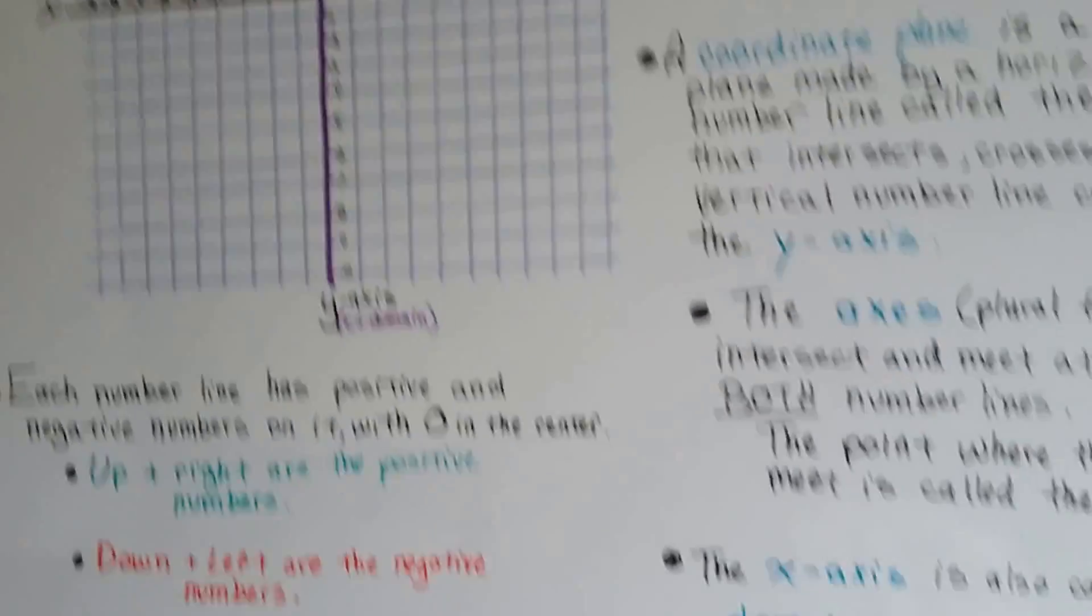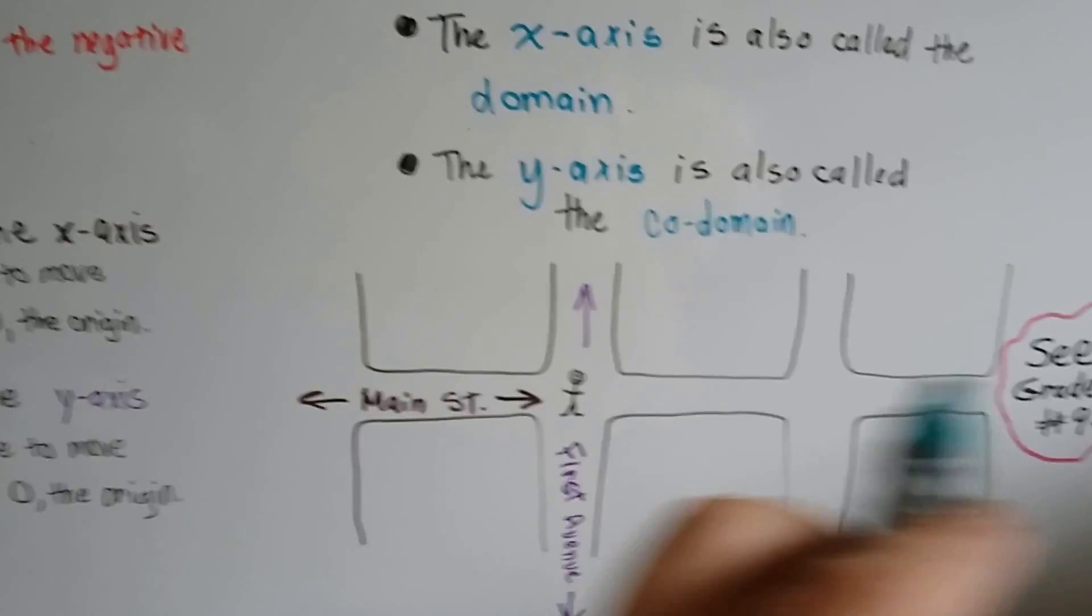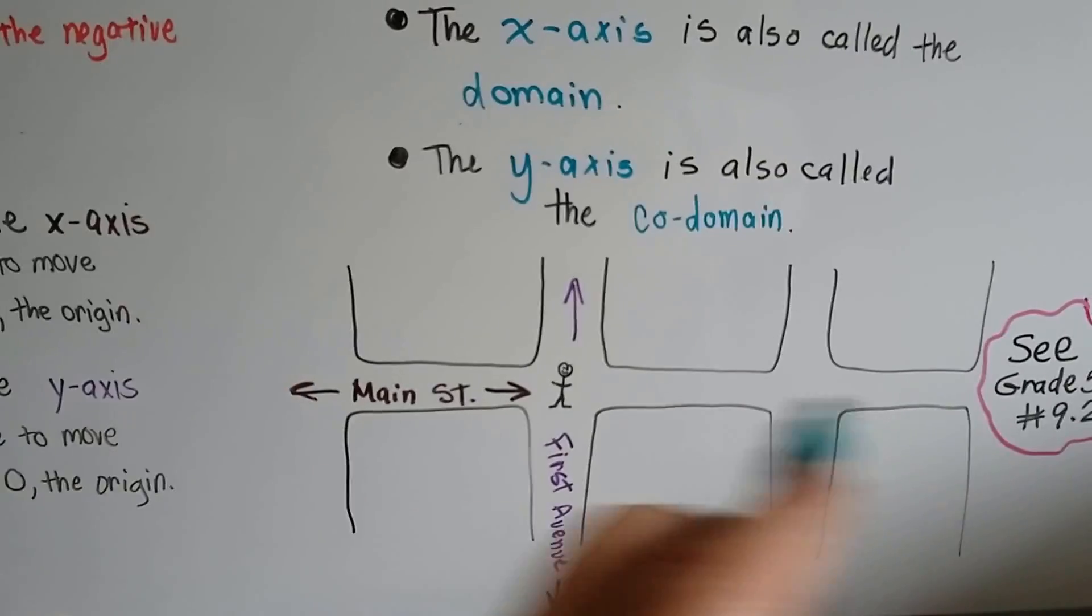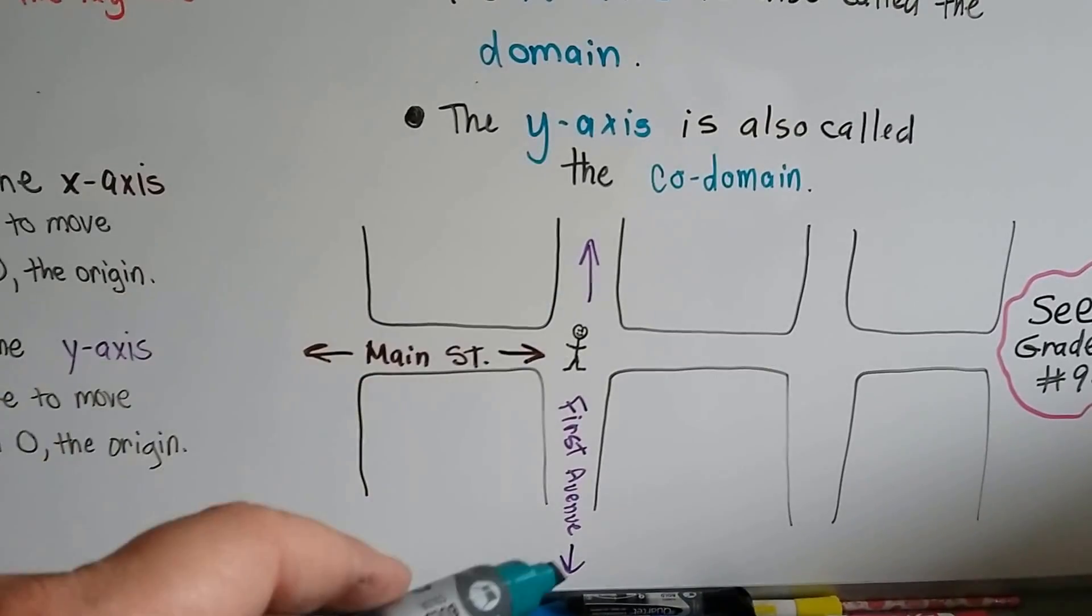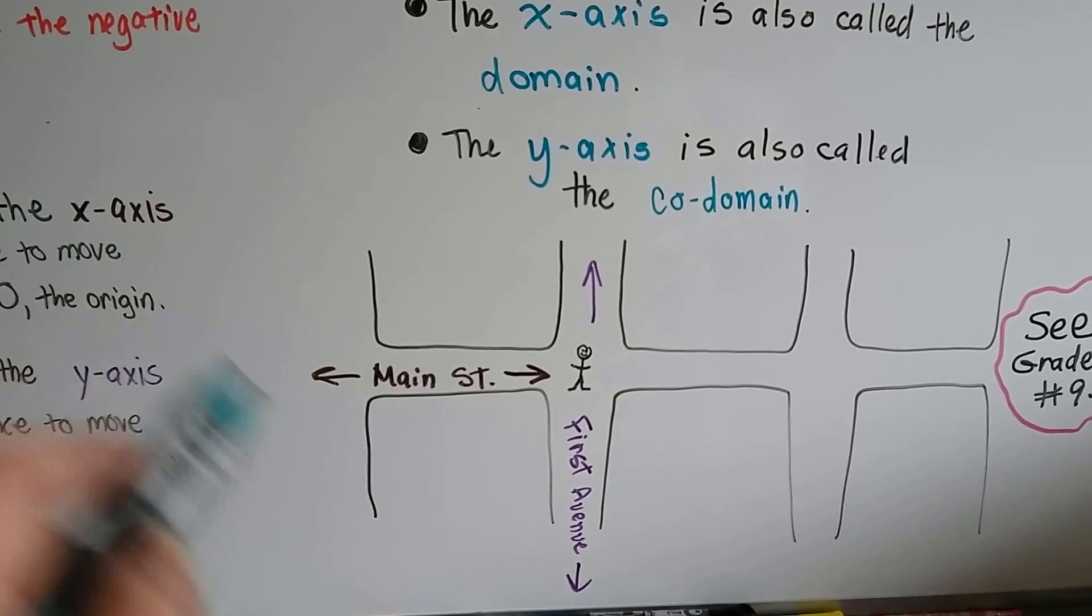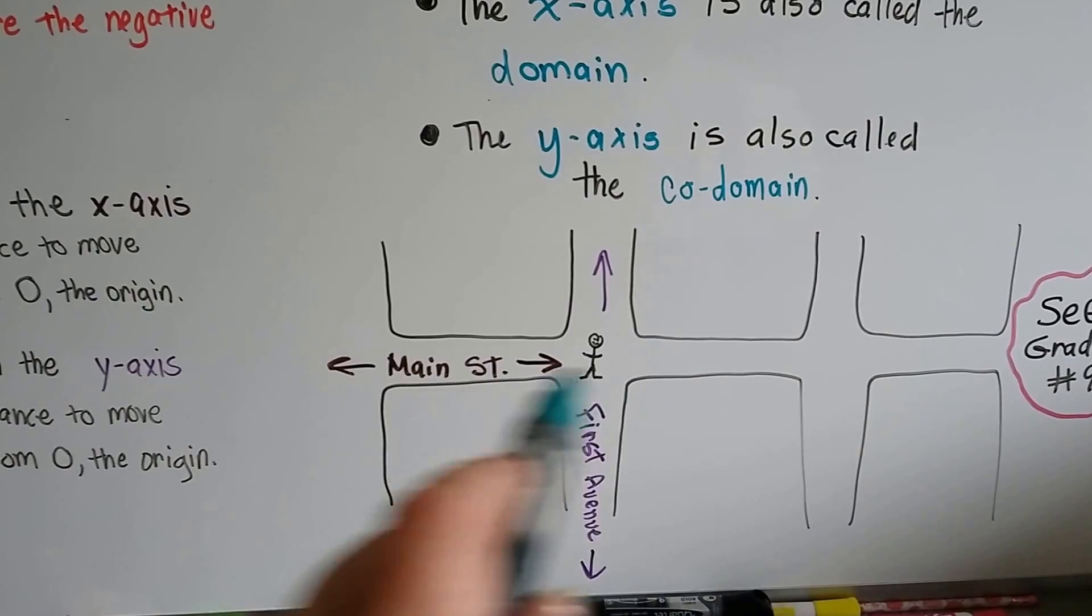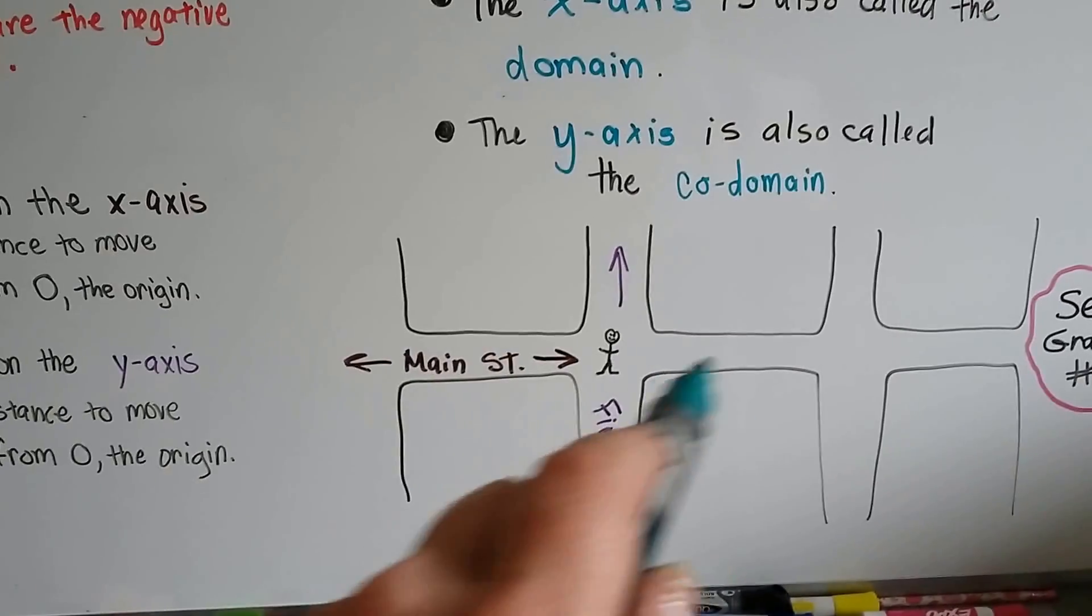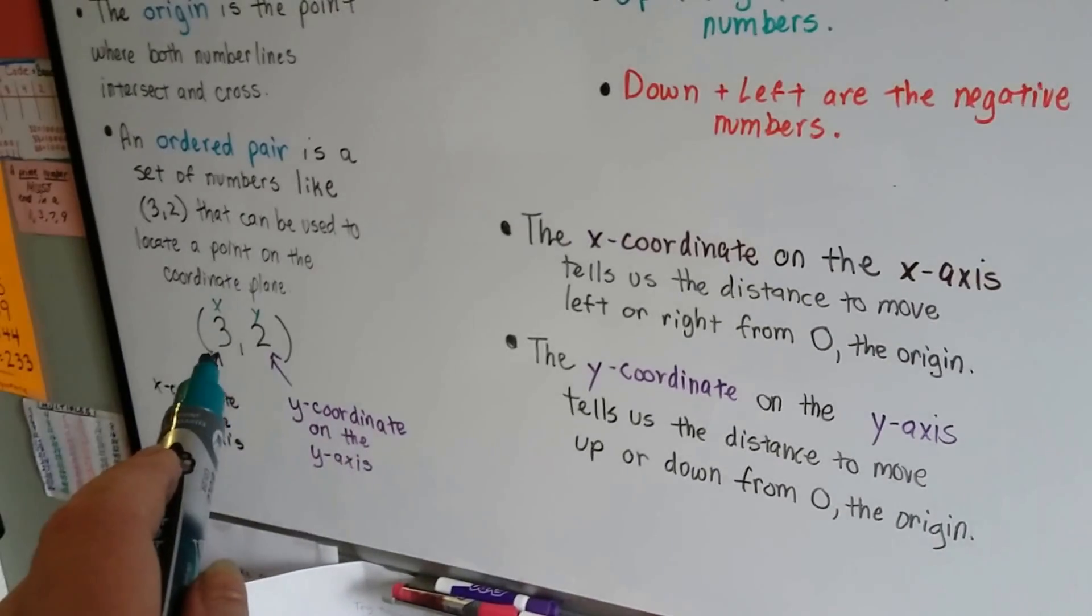Imagine that someone said to you, 'Can you meet me on Main Street?' And you said, 'Well, Main Street is 20 miles long. Where?' And they said, 'Oh, I'm sorry, on the corner of First Avenue and Main Street.' And you said, 'Oh okay, I know exactly where that is.' And then they were right there at the corner of First Avenue and Main Street. By giving two locations like that, Main Street and First Avenue, that's giving an ordered pair.